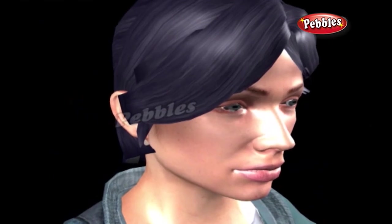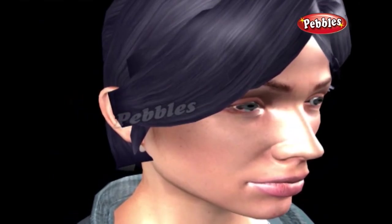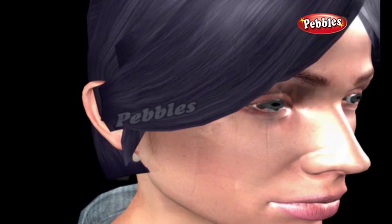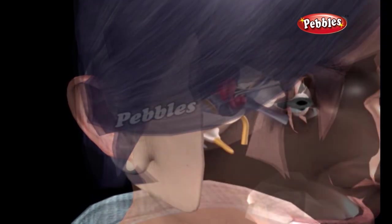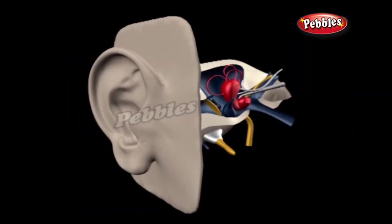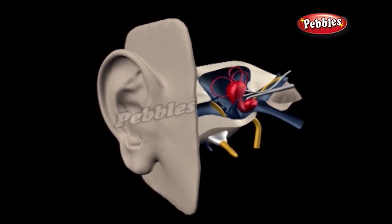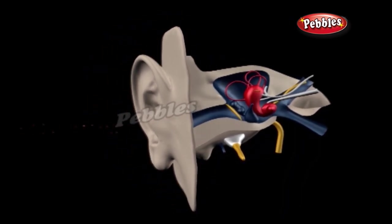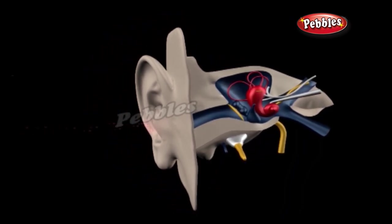Before explaining hearing aids, let's see how we hear sounds. Sound is simply a kind of energy we can hear. Things make sounds when they vibrate, setting air in motion around them. The pinnae of your ears are shaped so they can gather sounds coming from different directions and funnel them into the ear canal.